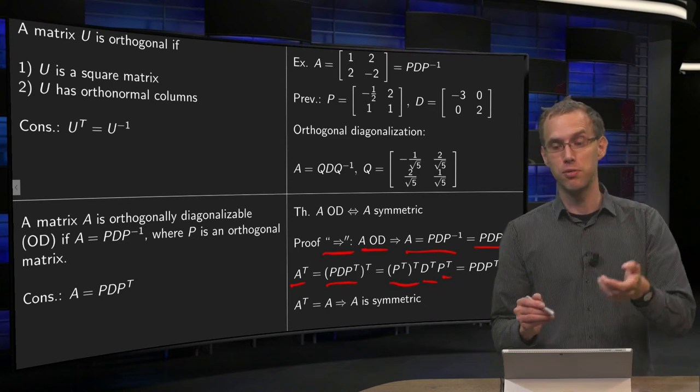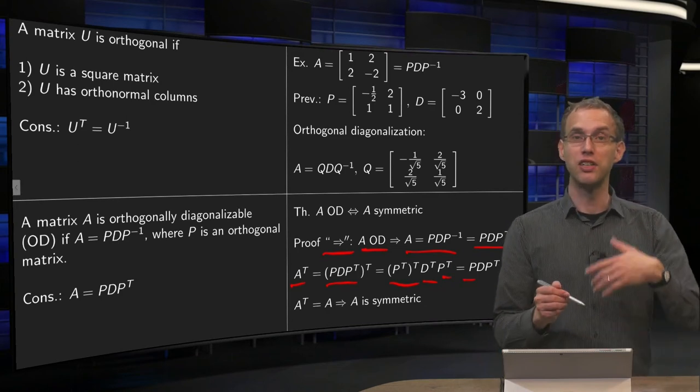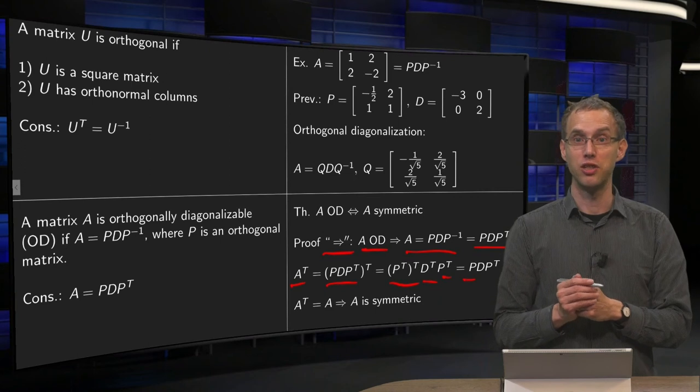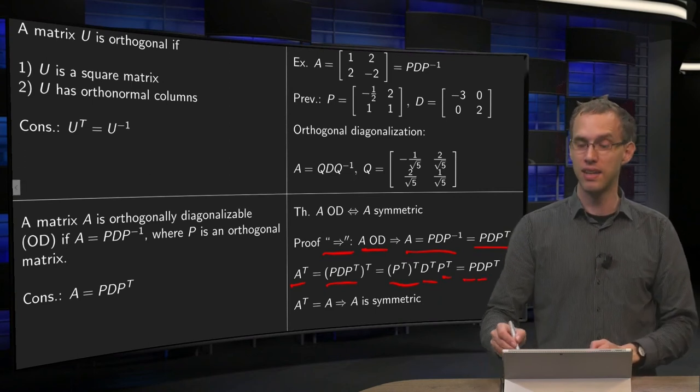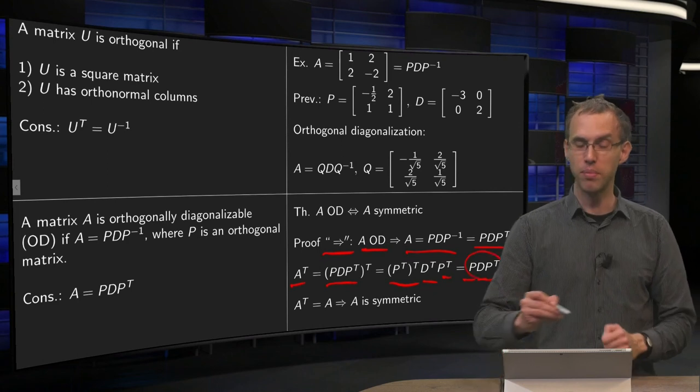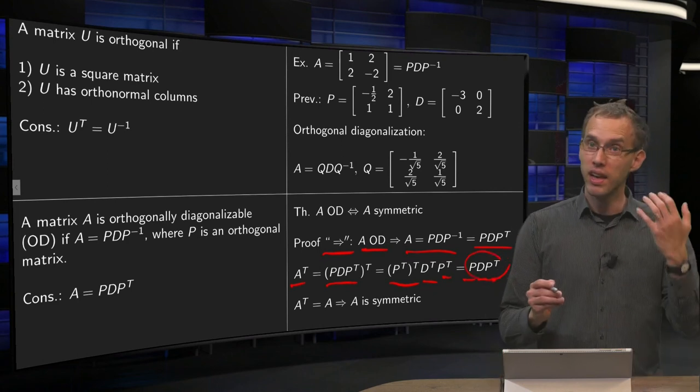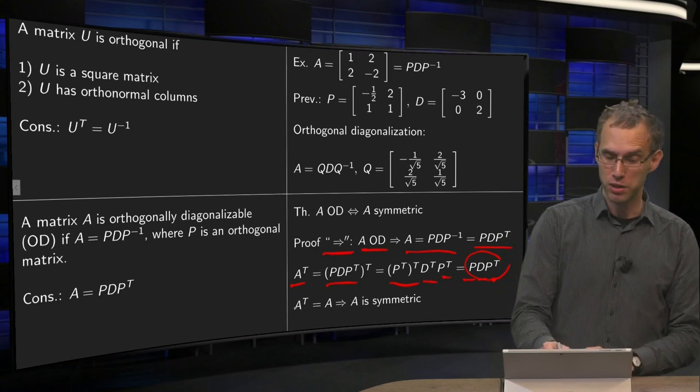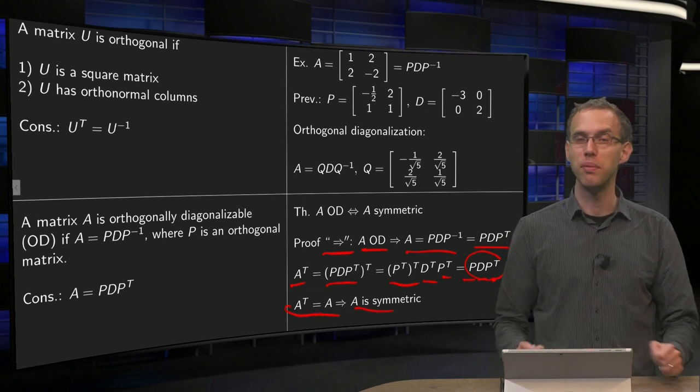So you get P transpose transpose, D transpose and another P transpose. Well, P transpose transpose is of course again P, transposing a diagonal matrix doesn't do anything. So you get your D back and you keep the P transpose over here. But this is just your matrix A. So if A is orthogonally diagonalizable, then A transpose is A, so A is symmetric.